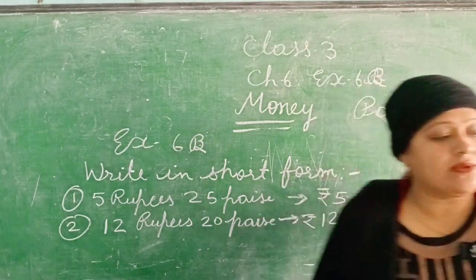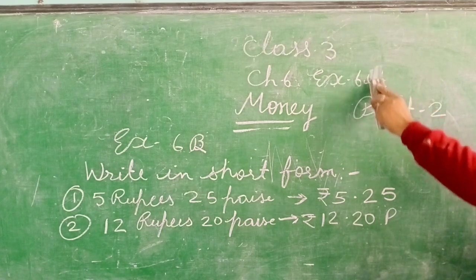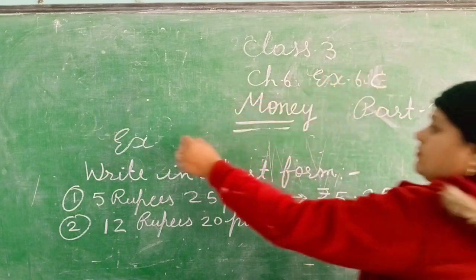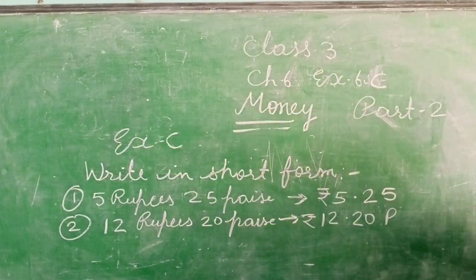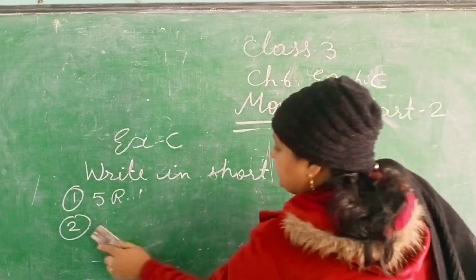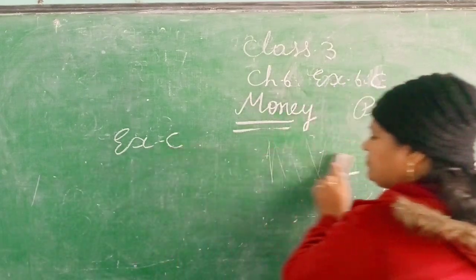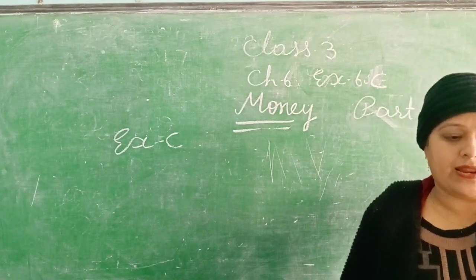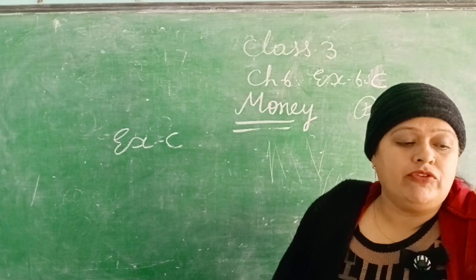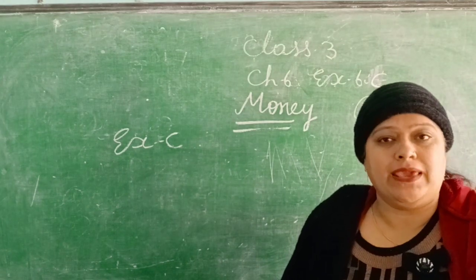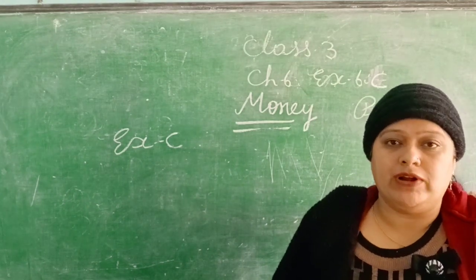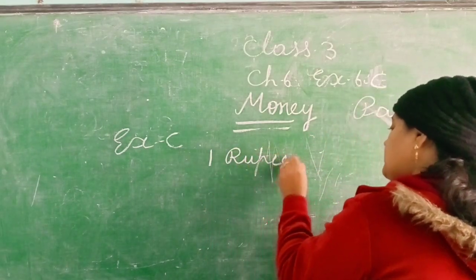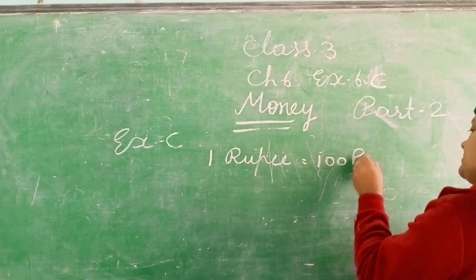Exercise 6C — and what we do is conversion. We know that 100 paise make 1 rupee. 1 rupee is equal to 100 paise.